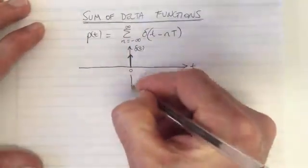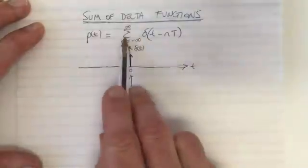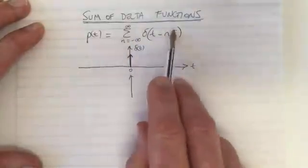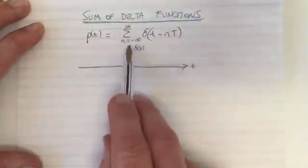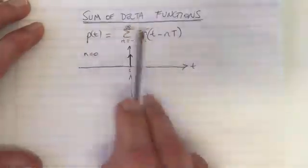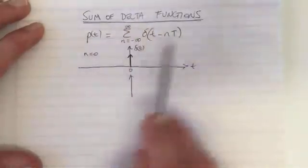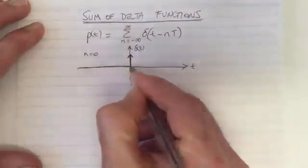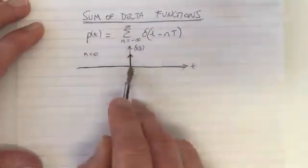Let me pick another one and plot that underneath. Another element of this sum. This function here was the function for n equals 0. The n equals 0 element gives a function. It's zero everywhere except at zero.